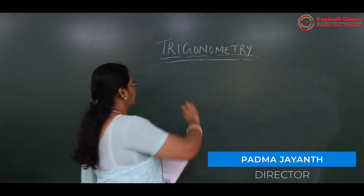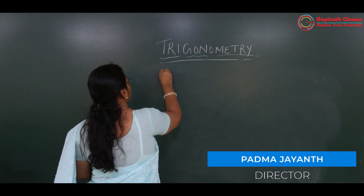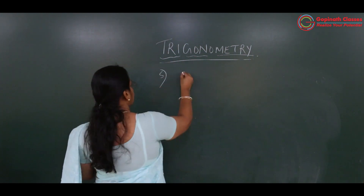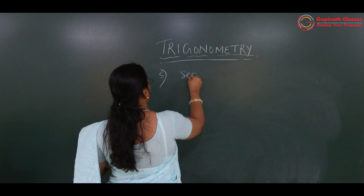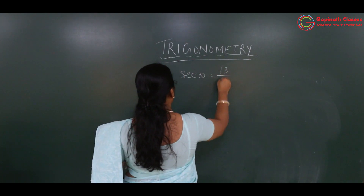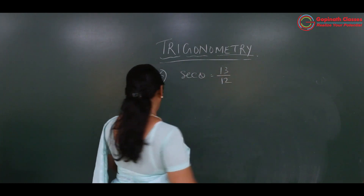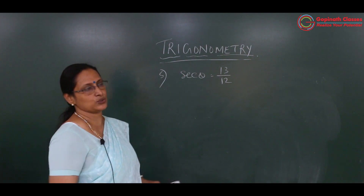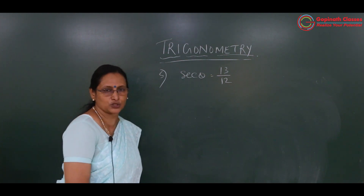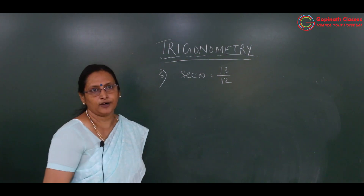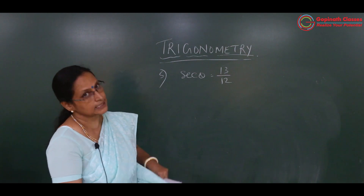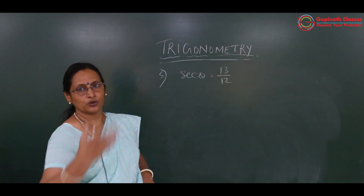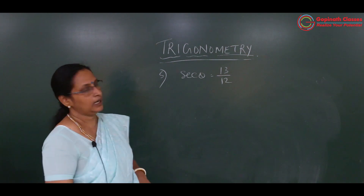We will be doing the fifth question now. The fifth question is: given sec theta is equal to 13 upon 12, find all other trigonometric ratios. As I said, if you know one ratio, we can find all the other five — there are six ratios total. If one is given, we can find out all the other ratios.